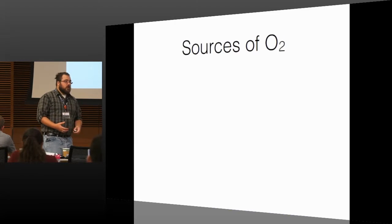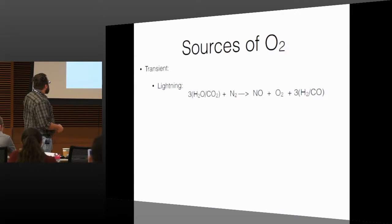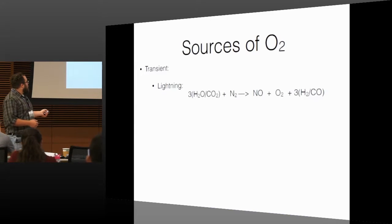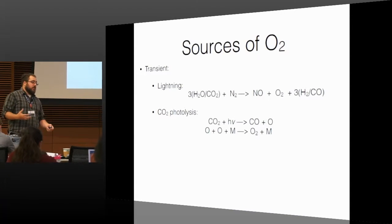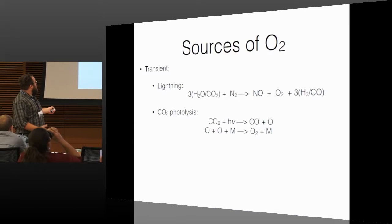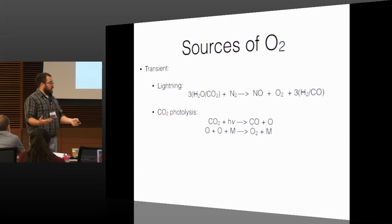Now, like I mentioned before, some of the sources for oxygen, we have transient sources in the present Earth's atmosphere, including lightning. So if you take some water and CO2, nitrogen, add a bunch of electricity, you get NO and O2 and some hydrogen or CO. This is remarkably short-lived because that oxygen goes back to recombine with NO or with H2, so it goes away fairly quickly. Another transient source is through CO2 photolysis. For example, in the upper atmosphere of the Earth, you can break apart CO2. That lone oxygen goes off and finds itself a dance partner and makes O2, which could linger in the upper atmosphere.